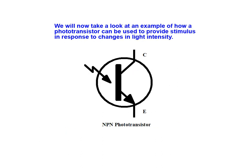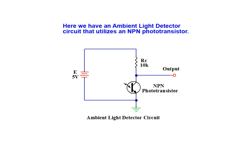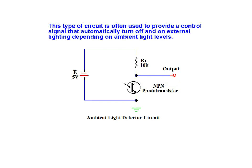We will now take a look at an example of how a phototransistor can be used to provide stimulus in response to changes in light intensity. Here we have an ambient light detector circuit that utilizes an NPN phototransistor. This type of circuit is often used to provide a control signal that automatically turns on or off external lighting depending on the ambient light levels present.